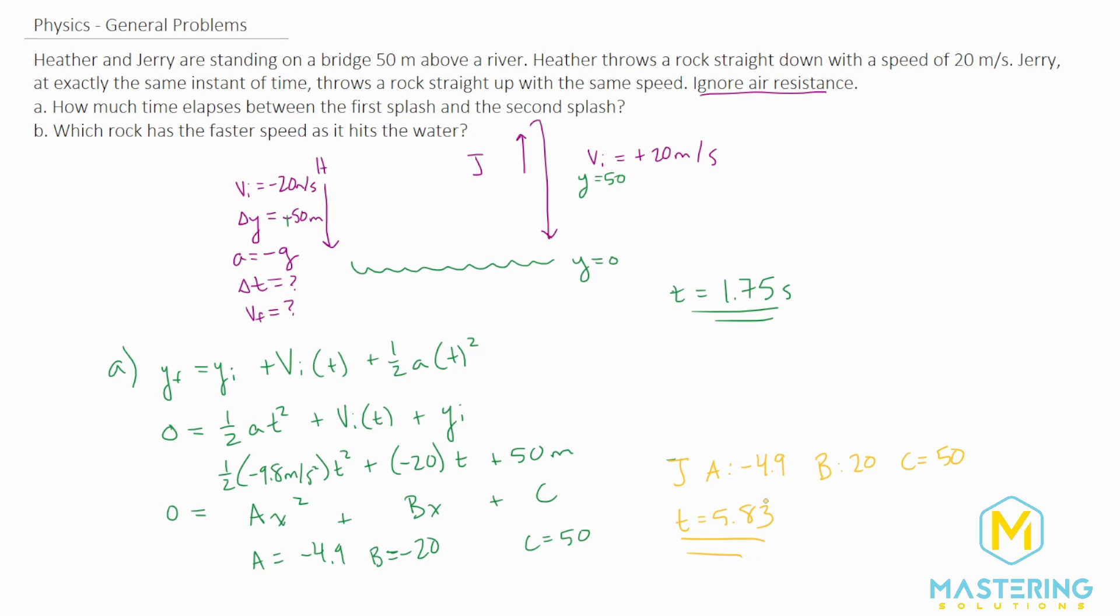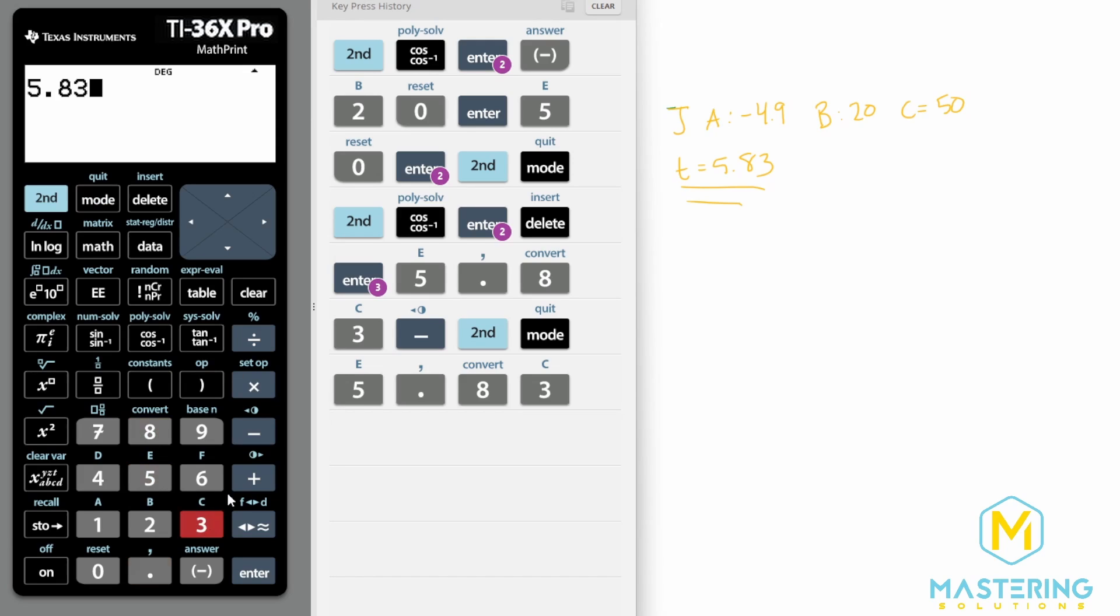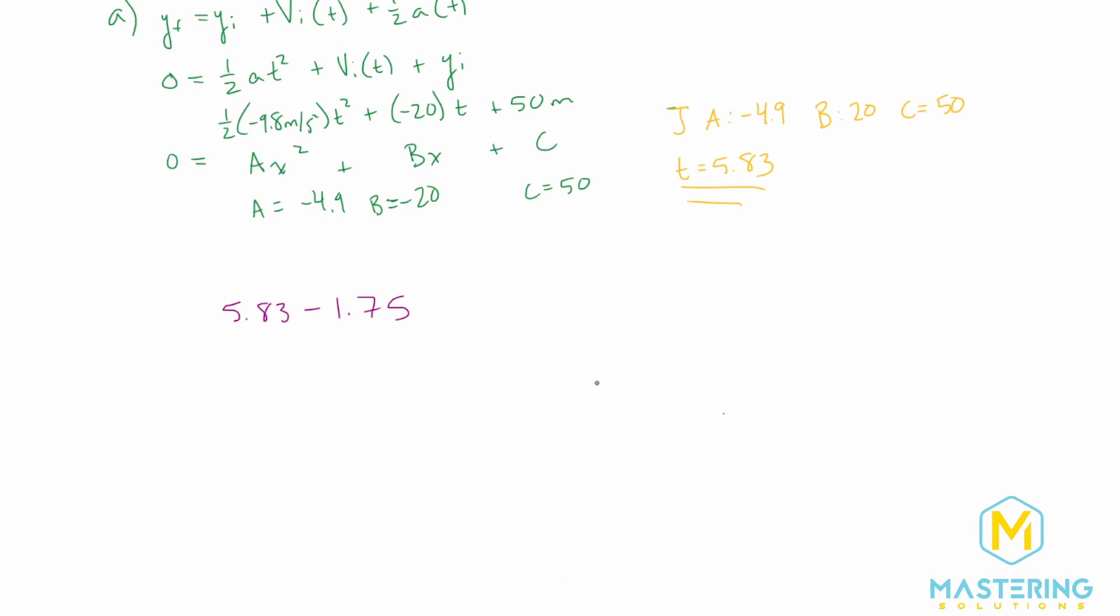So we have the two times now. So now that we have the two times, we can calculate what the difference is. We'll do 5.83 minus 1.75, which gives us a difference in time of 4.08. So we'll just say four seconds is the difference in the time for when the rocks hit the water.